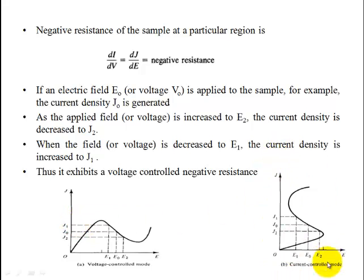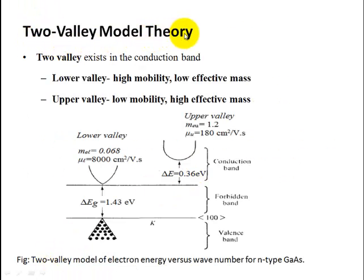For voltage-controlled negative resistance, E₀ gives J₀. When E increases to E₂, current density increases. But when E decreases to E₁, current density increases — exhibiting negative resistance. The lower valley has high mobility and low effective mass, while the upper valley has low mobility and high effective mass.